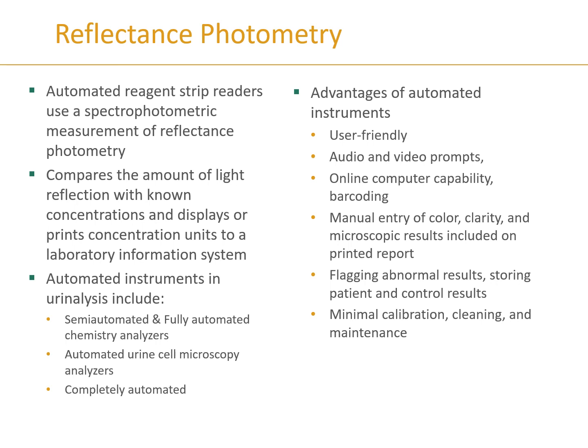Urinalysis automation uses reflectance photometry. With automated reagent strip readers, it uses spectrometric measurement of reflectance photometry, which compares the amount of light reflected with known concentrations and displays those concentrations in units on a printout. That can then be transferred to the laboratory information system, or LIS.